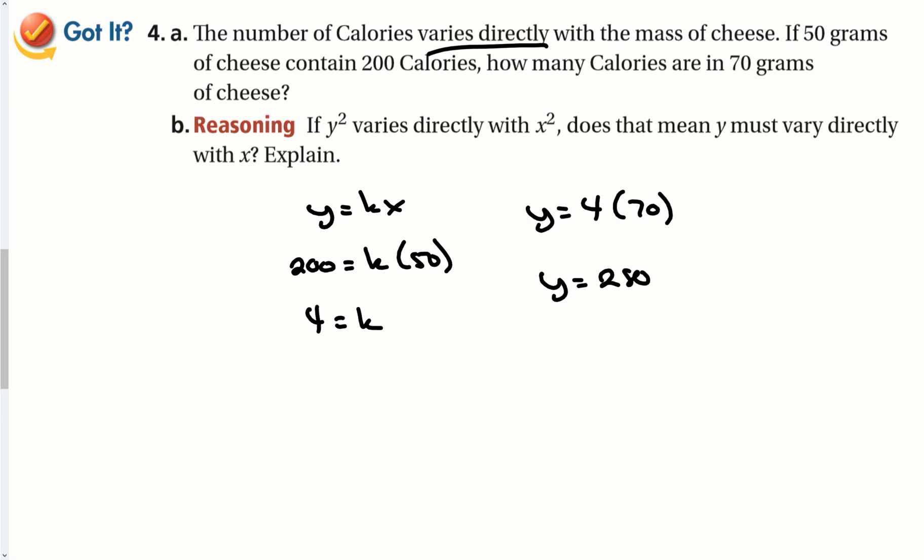If y squared varies directly with x squared, does that mean y must vary directly with x? Let's think about that. y squared varies directly with x squared. Yes and no, because if we take the square root of both sides, we could introduce extraneous solutions. But as one side goes up, the other side goes up, it's just a constant. So it won't exactly be - x divided by y won't always be the same. So that's not going to work.